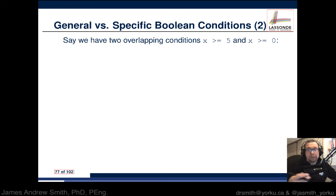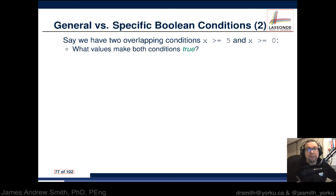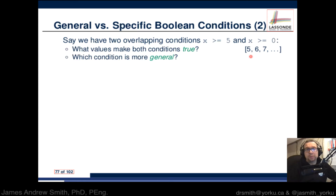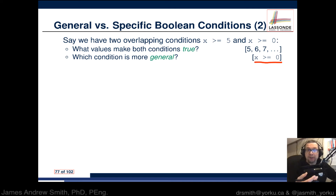Continuing with general versus specific boolean conditions: say we have two overlapping conditions — x greater than or equal to 5, and x greater than or equal to 0. They will overlap. What values make both conditions true? Any number that is 5, 6, 7 or greater will satisfy both conditions. Which one is more general? x greater than or equal to 0 is more general, because more numbers satisfy that condition than satisfy x greater than or equal to 5.